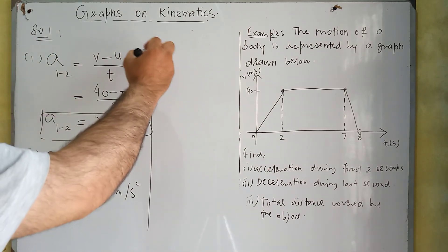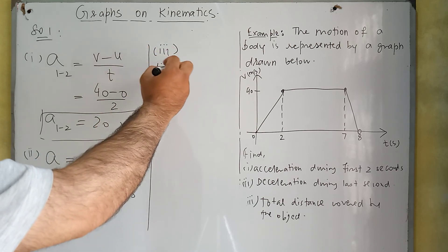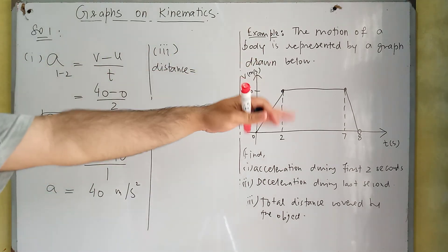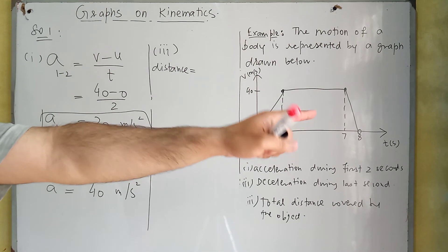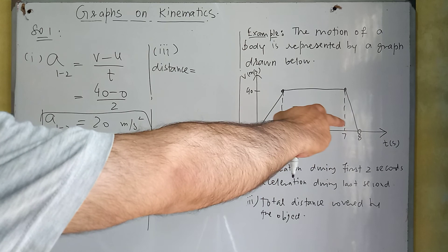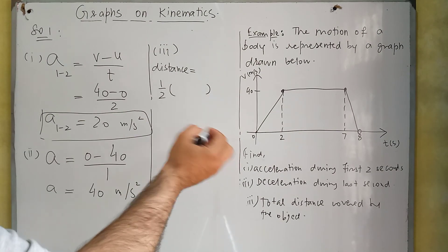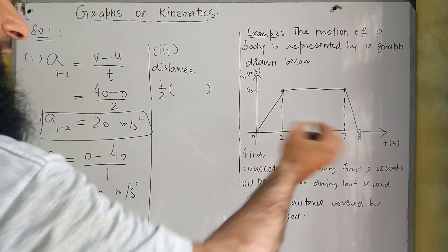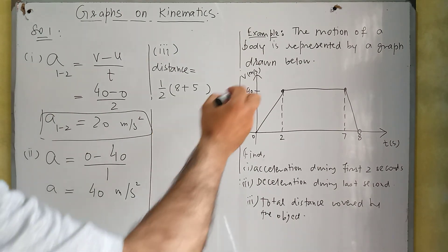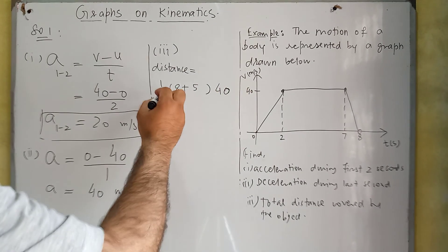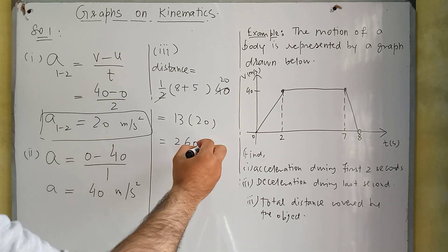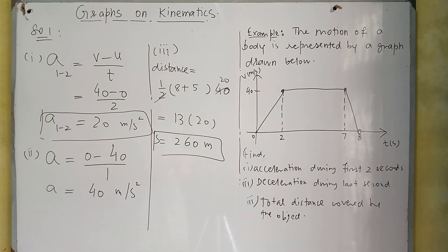In the third part, we need to find the total distance covered. Using the formula that distance equals the area under the velocity-time graph, the graph forms a trapezium. Area of a trapezium is one-half times the sum of parallel sides multiplied by height. The longer parallel side spans from 0 to 8 seconds, so it equals 8. The shorter parallel side spans from 2 to 7 seconds, so it equals 5. The height of the trapezium is 40 meters per second. Therefore, distance equals one-half times (8 plus 5) times 40, which gives one-half times 13 times 40, equal to 260 meters.